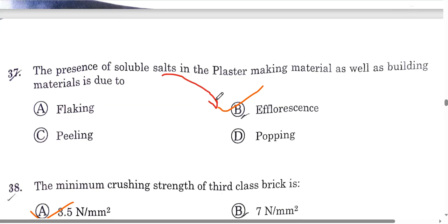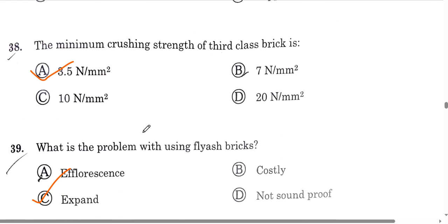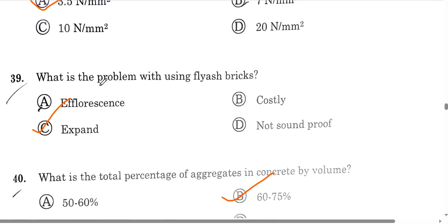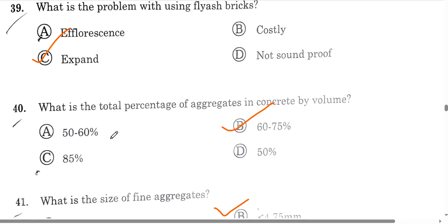Question number 37: soluble salts present in bricks cause efflorescence. Question number 38: the minimum crushing strength for third-class brick is 3.5 N/mm², second class is 7, and first class is 10. Option A is the correct answer. Question number 39: the problem with using fly ash in concrete is that it causes expansion due to carbon content at high temperature. Option C is the correct answer. Question number 40: the total percentage of aggregate in concrete by volume is 60 to 75 percent.